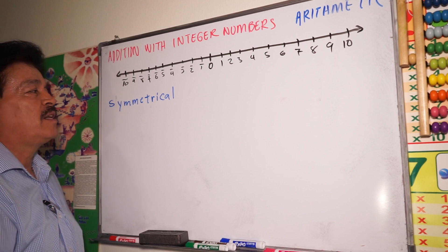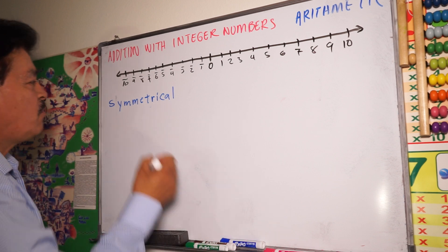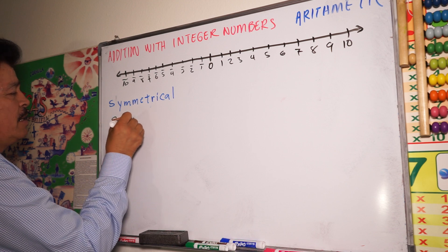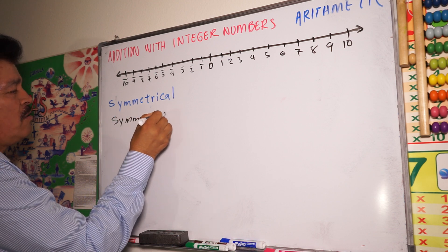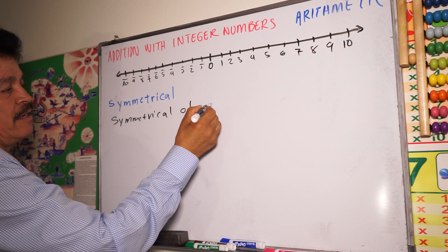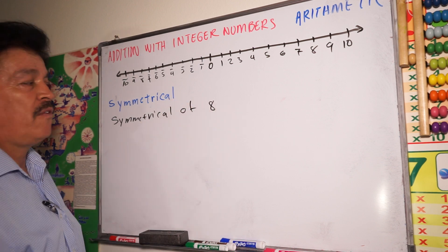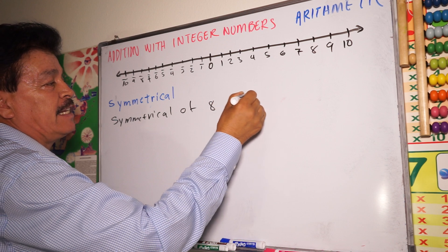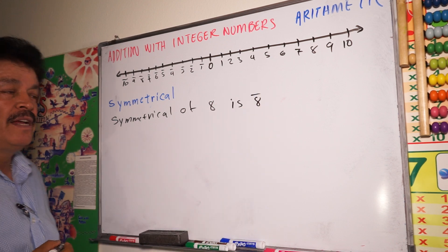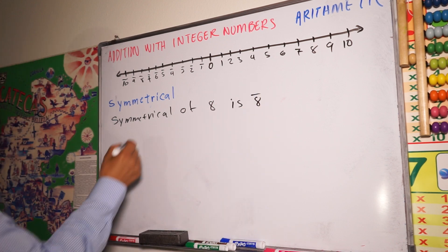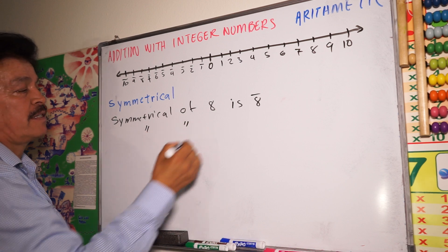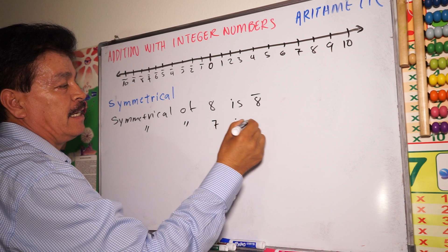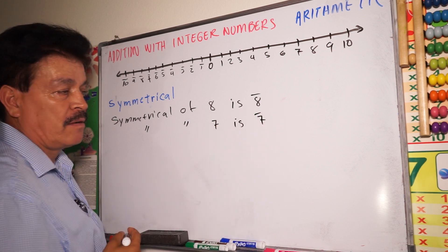You need to understand what is the symmetrical. The symmetrical — for example, the symmetrical of eight — what is the symmetrical of eight? It's negative eight, right? What is the symmetrical of seven? Seven is negative seven, right?